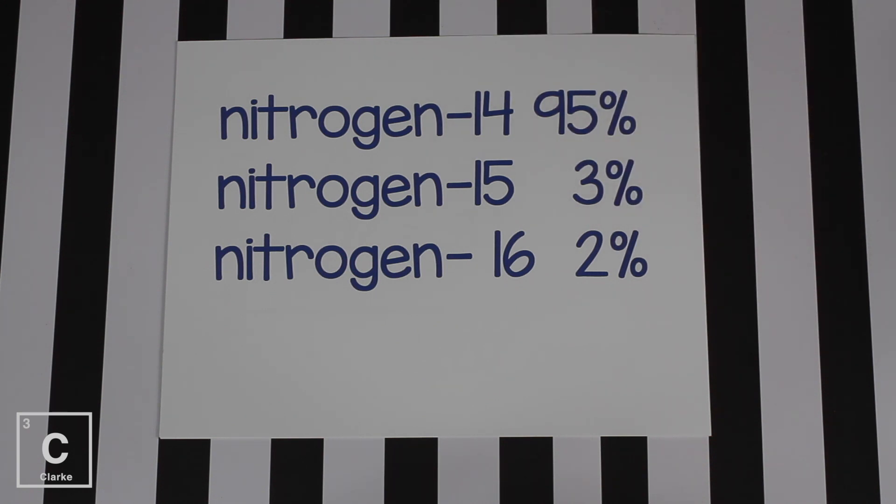Well it just means if we took all of the nitrogen in the world, since nitrogen is the example we're using, if we took all the nitrogen on planet Earth, 95% of that nitrogen is going to be the isotope nitrogen-14.